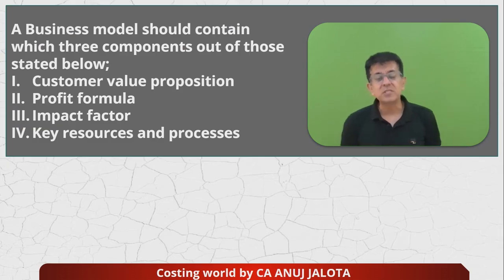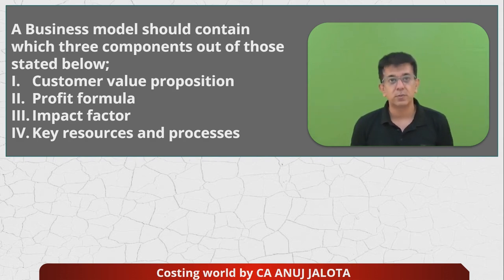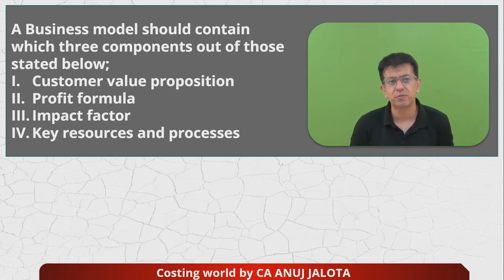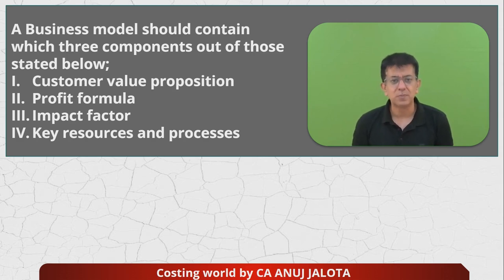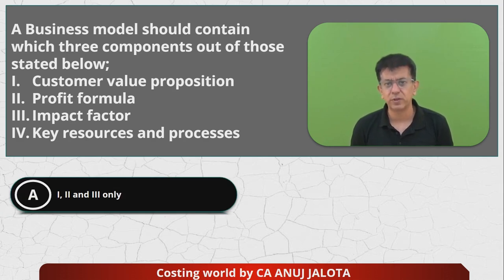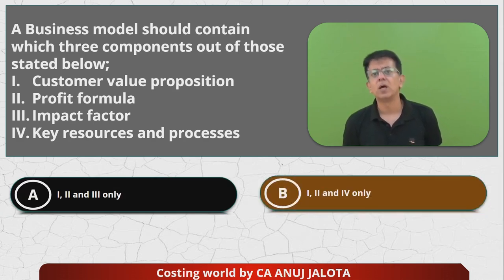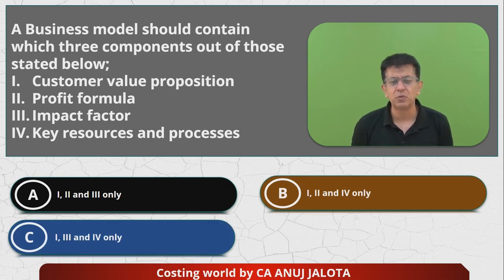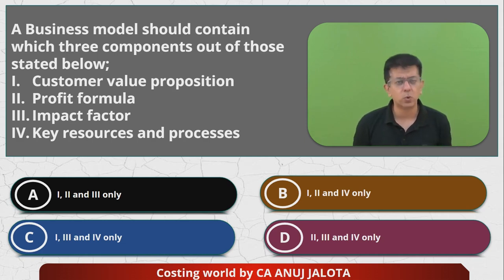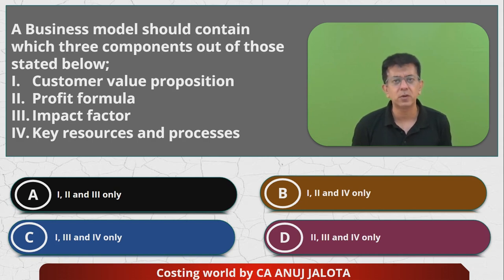The MCQ is: a business model should contain which of the three components out of the four stated below? First, customer value proposition. Second, profit formula. Third, impact factor. Fourth, key resources and processes. The options are: one, two and three; one, two and four; one, three and four; or two, three and four. If you know the answer, pause the video and comment.